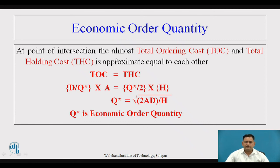The formula that guides us to find the economic ordering quantity is derived at the point of intersection, where total ordering cost equals total holding cost: (D/Q) × A = (Q/2) × H. Solving for Q*, the economic ordering quantity formula is: Q* = √(2AD/H).